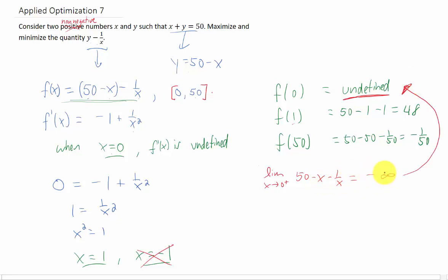So we technically don't have an absolute minimum of this function. You can just continue to choose values of x that are closer and closer to 0 to get smaller and smaller function values. So there is no absolute minimum, but we do have an absolute maximum in this interval of 48.